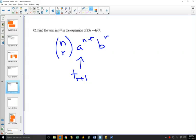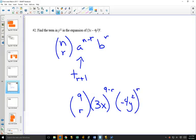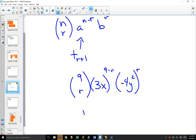Where that's important is you want to find a term with y to the 12th. If we look at what this would look like, we don't know which term it is, so we don't know the value of r. We know that the a value is 3x to the 9 minus r, and the b value is negative 4y squared to the power of r. I know what r is.